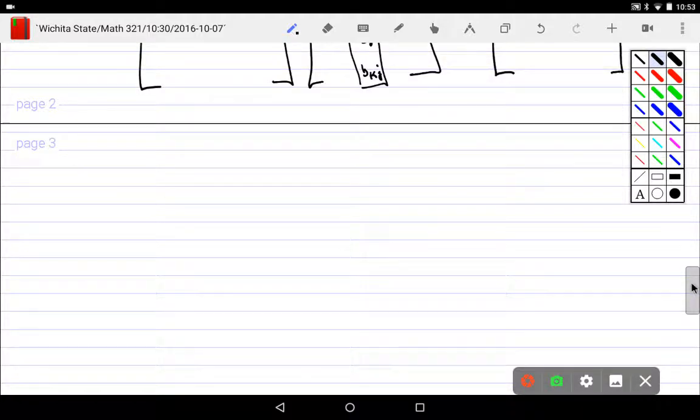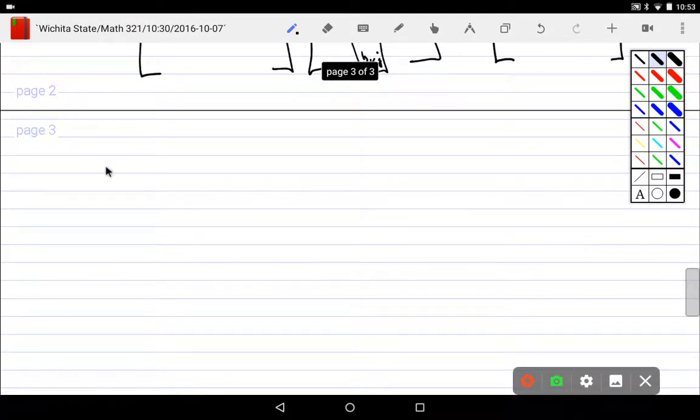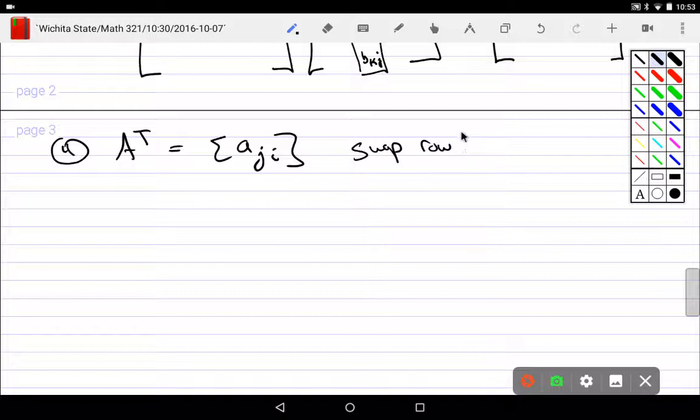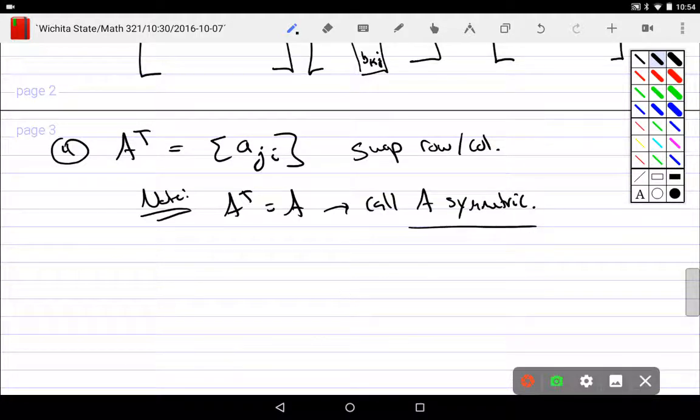Okay. And so, fourth thing is the transpose. All the transpose is, is we take A and flip the, instead of ij, we make it aji. Transpose is just swap row columns. Column one becomes row one. Column two becomes row two. Column three becomes row three. We just swap it. And a little note here. If A transpose is equal to A, we call A symmetric. In particular, it's symmetric about its diagonal.